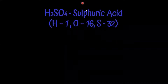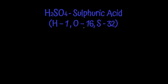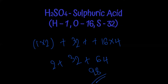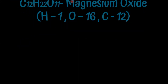The second problem is H2SO4, sulfuric acid. We have 2 hydrogen atoms (1×2 = 2), one sulfur atom (32), and four oxygen atoms (16×4 = 64). Adding these: 2 + 32 + 64 = 98. The relative molecular mass of sulfuric acid is 98.